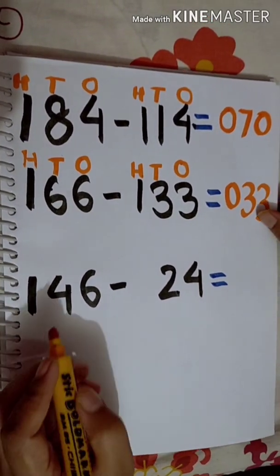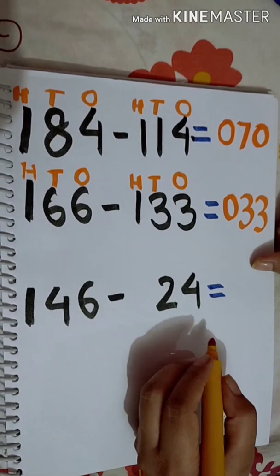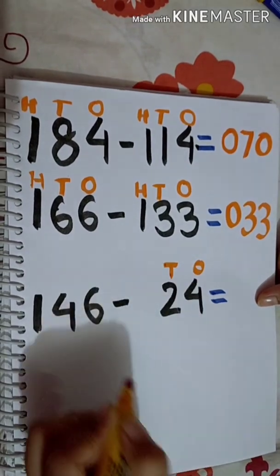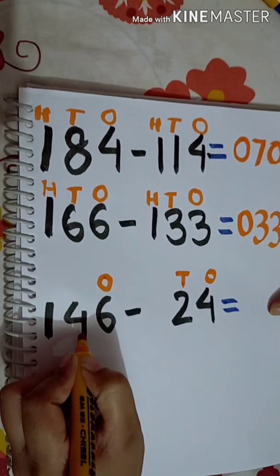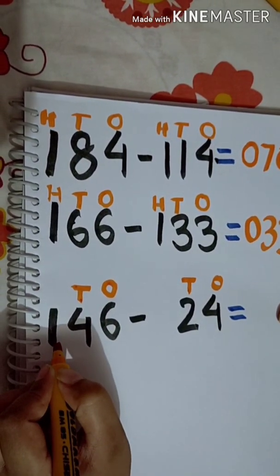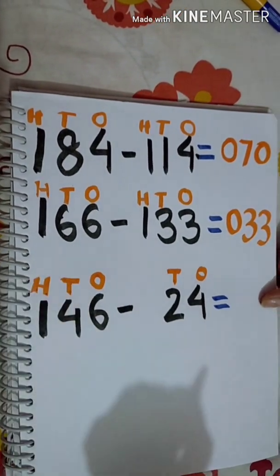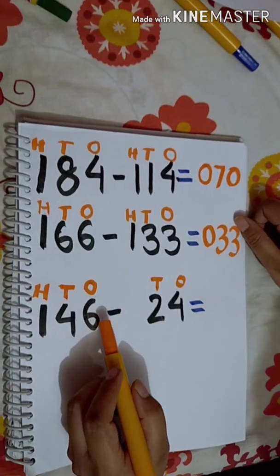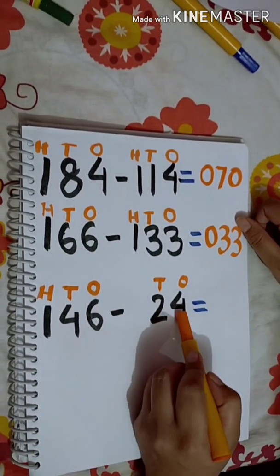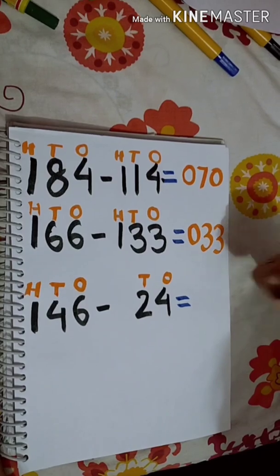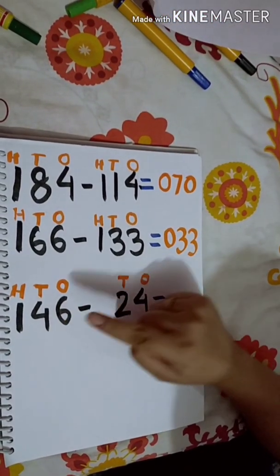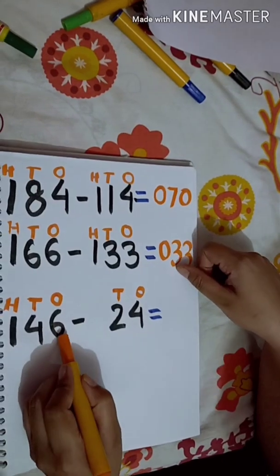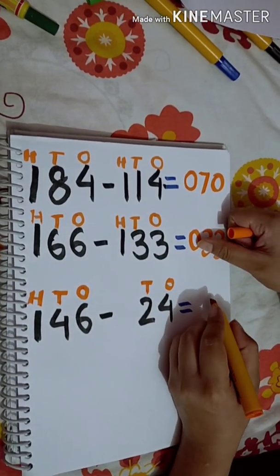Let's move to another question: 146 minus 24. Place the numbers — 4 is in the 1's place (O), 2 is in the 10's place (T), 6 is in the 1's place (O), 4 is in the 10's place (T), and 1 is in the 100's place (H). First subtract the 1's digit: 6 minus 4. Keep 4 in mind and count up to 6 — 5, 6 — using 2 fingers. So 6 minus 4 is equal to 2.